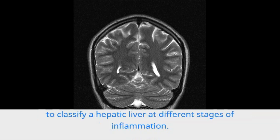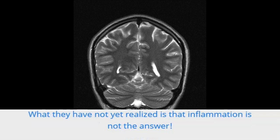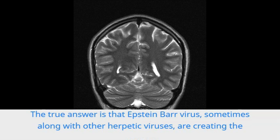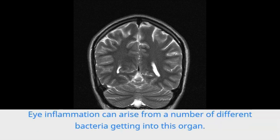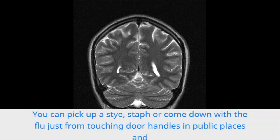They have no clue that the cause of hepatitis C is Epstein-Barr creating damage in the liver over an extended period of time. Because they have yet to single out the particular bugs that are triggering these issues, the medical profession has to rely on inflammatory markers in the blood or MRIs and CT scans to classify a hepatic liver at different stages of inflammation. What they have not yet realized is that the true answer is that the Epstein-Barr virus — sometimes along with other herpetic viruses — is creating the inflamed liver.